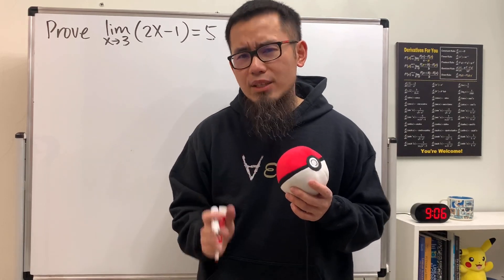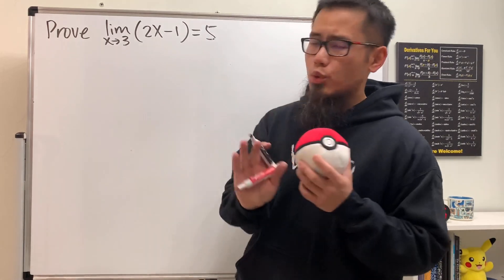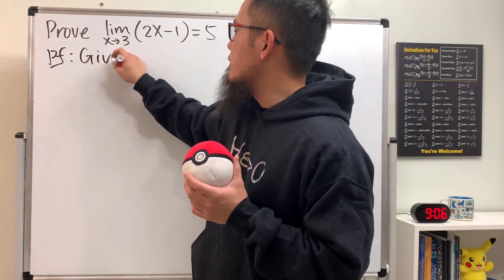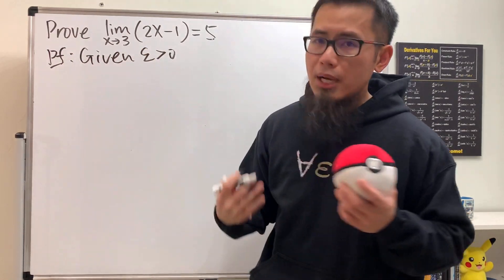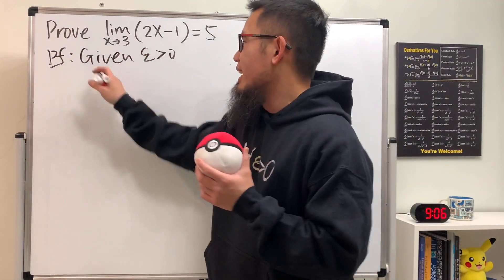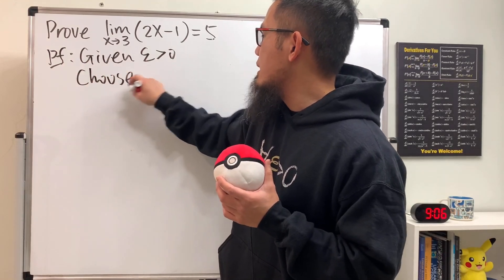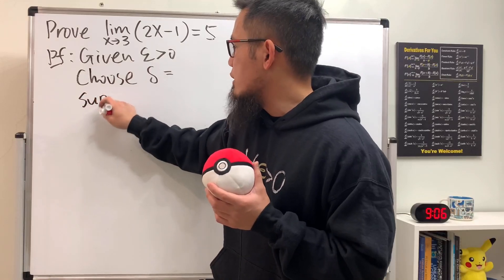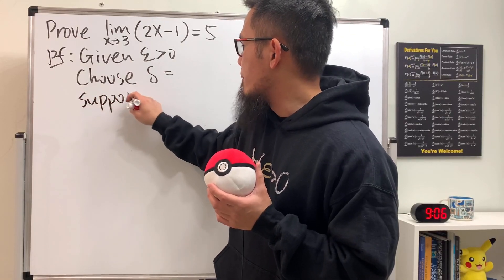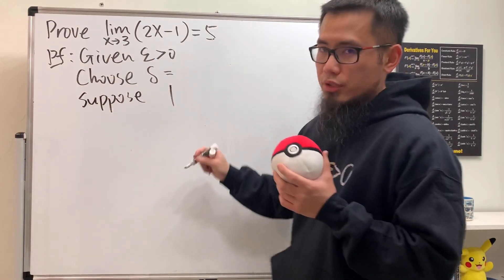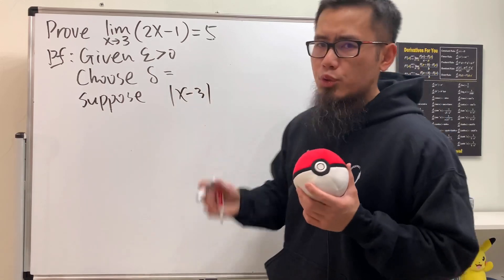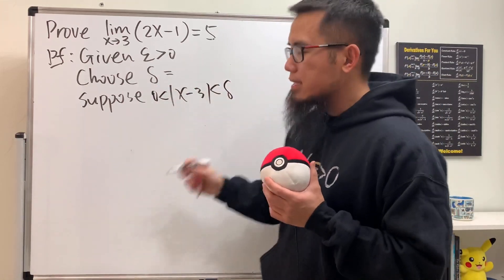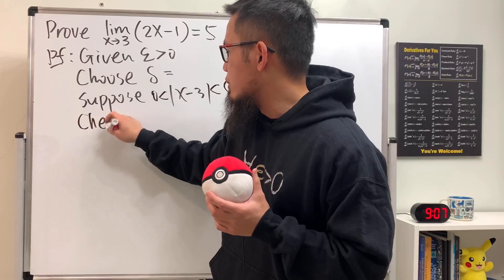Given, choose, suppose, check — that's how you do the epsilon-delta definition. First, write on the proof: 'Given epsilon greater than zero.' Next, 'Choose delta' — we don't know what delta is yet, so leave it blank. Then 'Suppose' — put down the absolute value of x minus 3 in between zero and delta. Lastly, 'Check.'